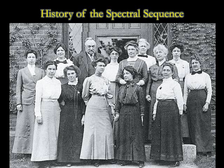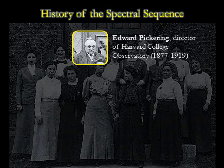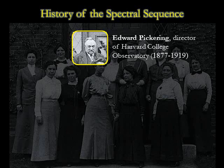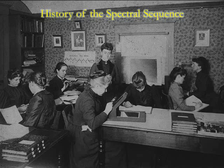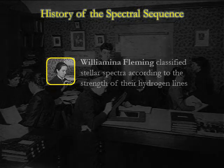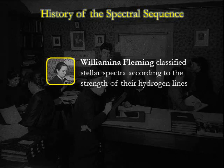The ordering OBAFGKM comes from the history of stellar spectroscopy. In the late 1800s, the director of Harvard College Observatory was Edward Pickering. During his tenure, he hired numerous assistants whom he called his computers. Most of Pickering's computers were women who had studied physics or astronomy at women's colleges. Women had few opportunities to do astronomy at the time, and Pickering's project of studying and classifying stellar spectra provided plenty of work and opportunity for his female computers. Many of the Harvard Observatory women ended up among the most prominent astronomers in the late 1800s and early 1900s. One of the first computers was Williamina Fleming, who classified stellar spectra according to the strength of their hydrogen lines. Type A was assigned for the strongest hydrogen lines, type B for slightly weaker, and so on.